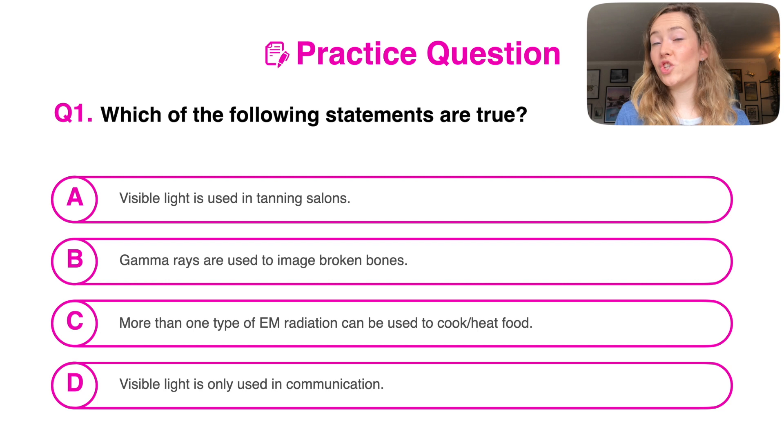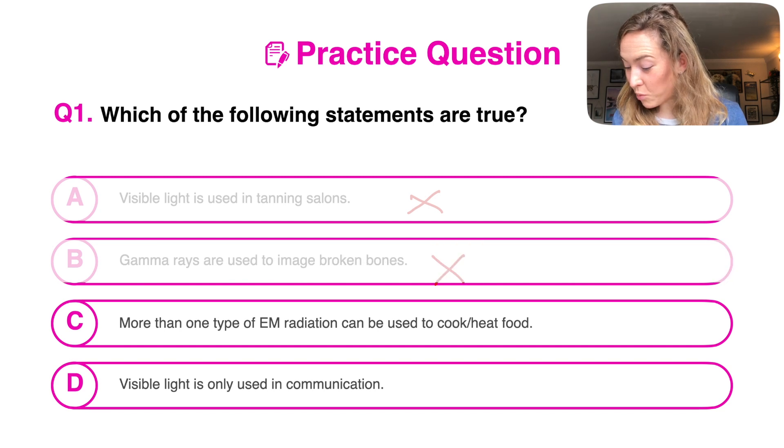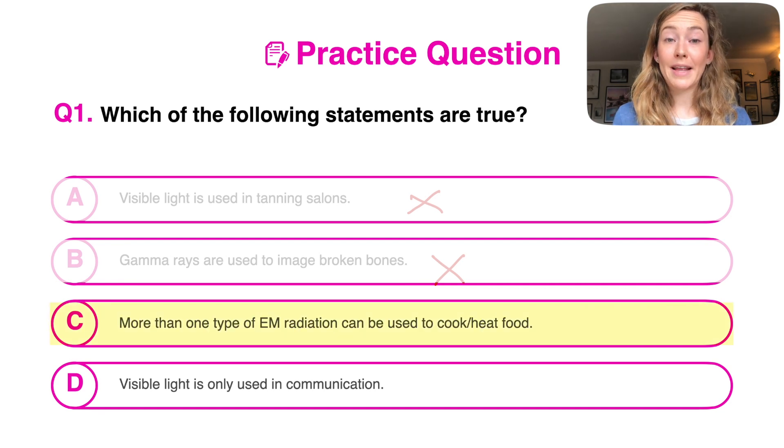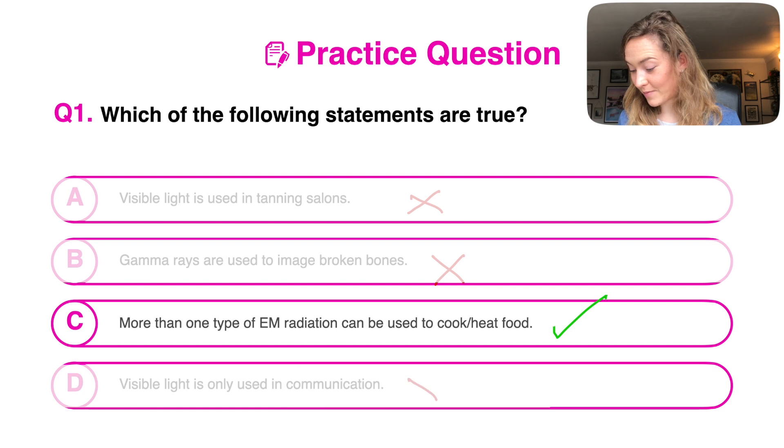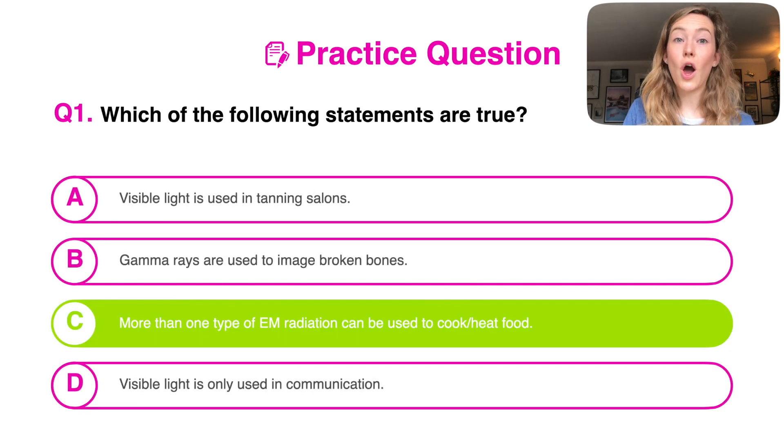We've been asked here which statement is true. Let's have a quick read through. Visible light is used in tanning salons. Well, it's not. We've established that before, that in that particular case, UV light would be used. Gamma rays are used to image broken bones. Not needed. We want x-rays. Remember, the high frequency can travel through tissue, but not through bone. Gamma would be able to pass through both. More than one type of electromagnetic radiation can be used to cook or heat food. Now, that is the case. We can use microwaves, of course, the clue's in the name, but we can also use infrared. And finally, visible light is only used in communication. Well, it's not. It's used for lots of other things as well. In that particular case, we can see that C is the only true statement here.